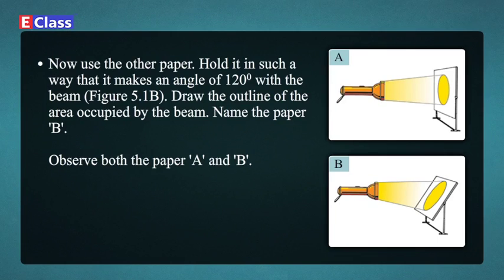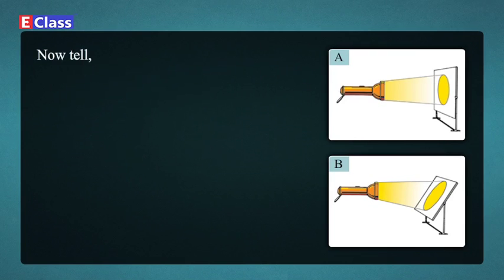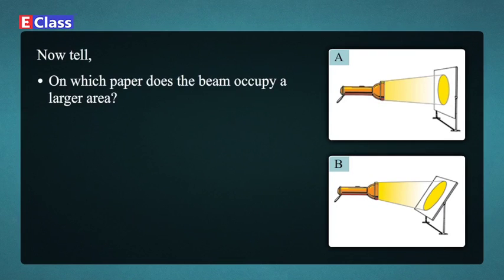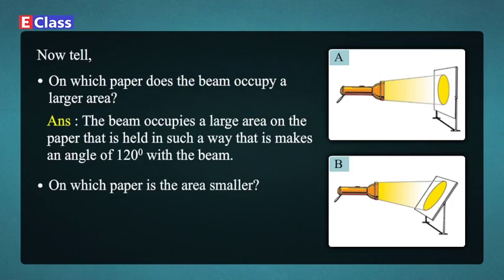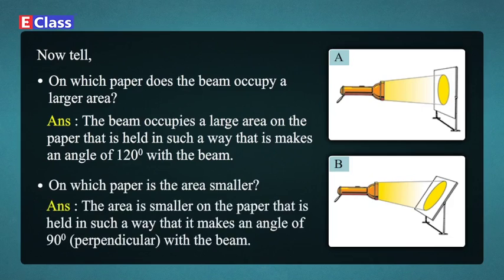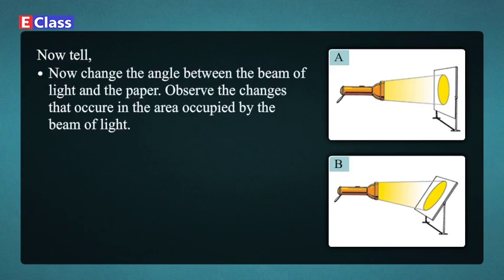Draw the outline of the area occupied by the beam and name the paper B. Observe both papers A and B. On which paper does the beam occupy a larger area? Answer: The beam occupies a larger area on the paper held at an angle of 120 degrees with the beam. On which paper is the area smaller? Answer: The area is smaller on the paper held perpendicular (90 degrees) to the beam.